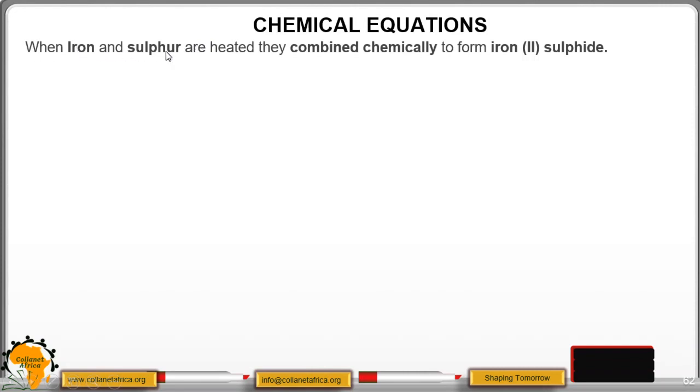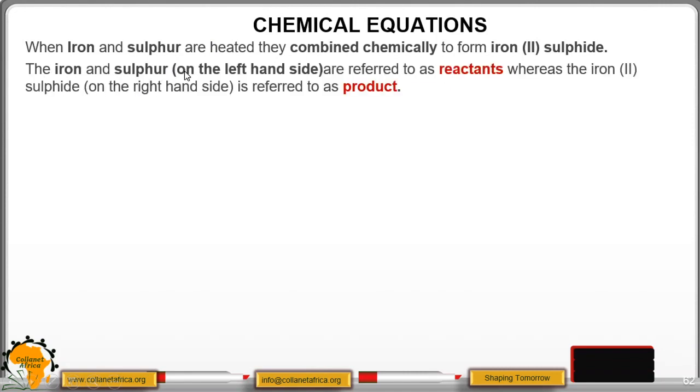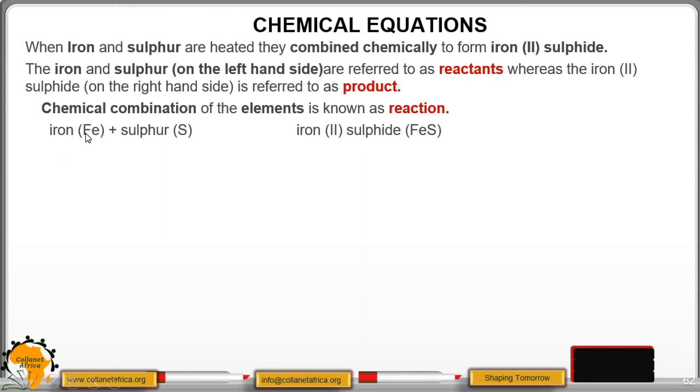Chemical equations. When iron and sulfur are heated, they combine chemically to form iron sulfide. The iron and sulfur on the left side are referred as reactants, while iron sulfide on the right side is referred as a product. Chemical combination of element is known as a reaction. So when the chemicals, or there may be elements combine, they react. So we have iron here, the symbol is Fe; sulfur S, combined to form iron sulfide FeS. So these are known as the reactants, while on this one, on the right side, we have the product. This presentation is known as word representation.